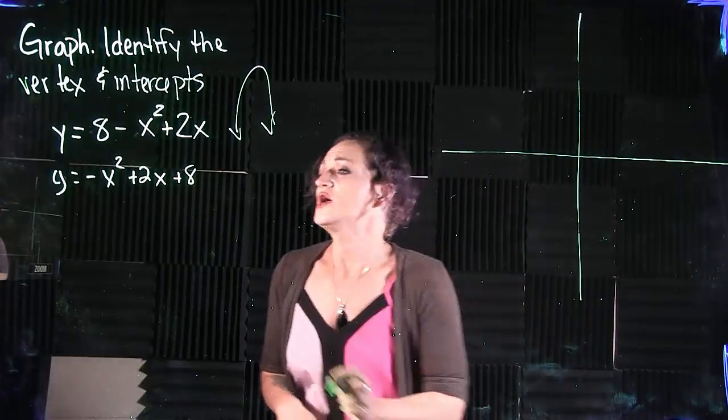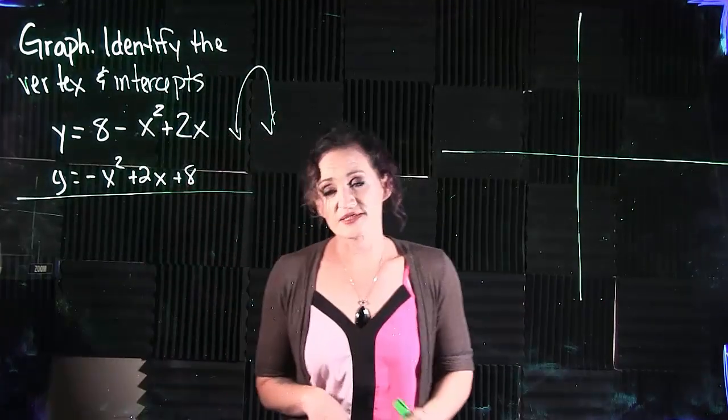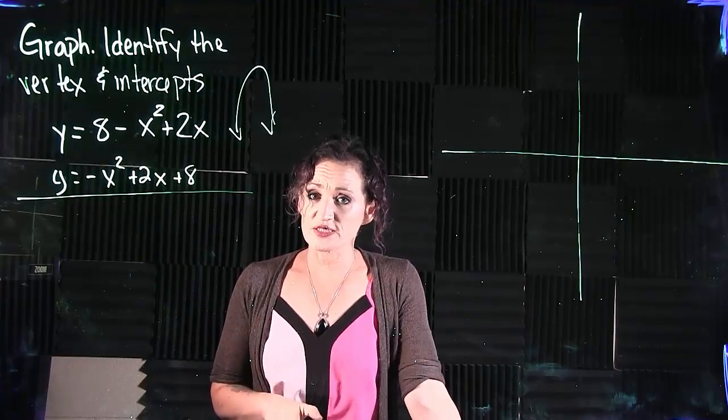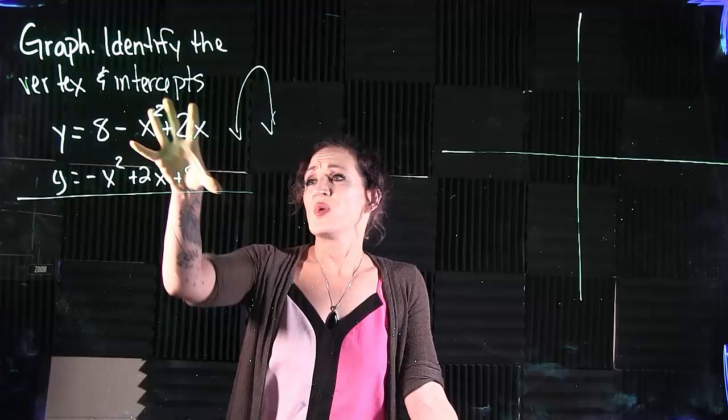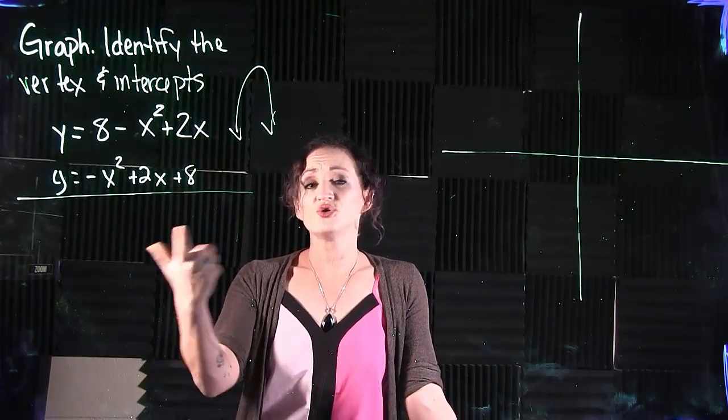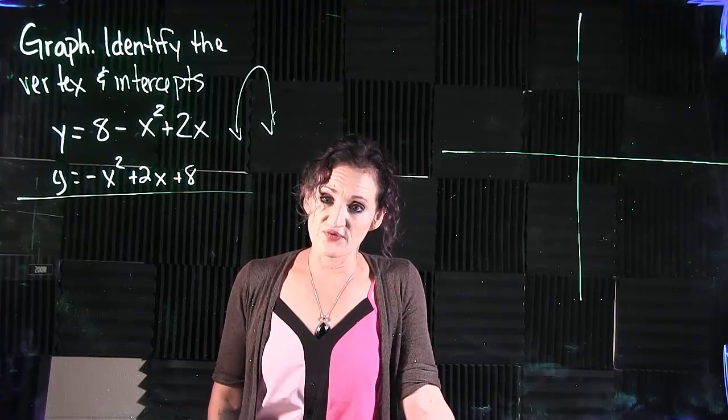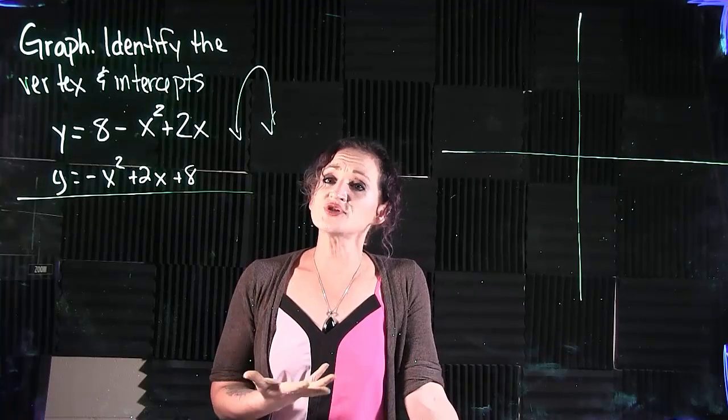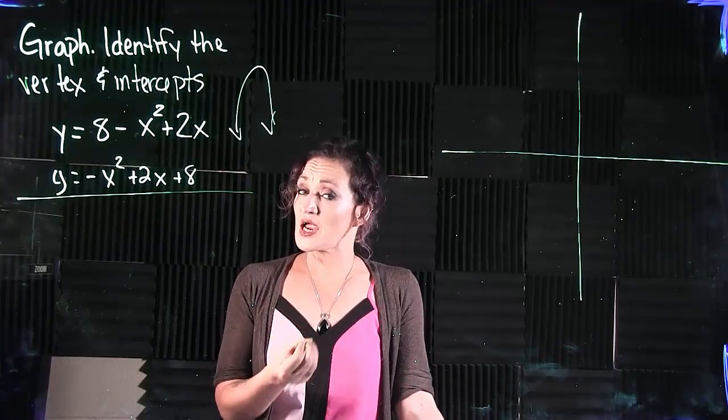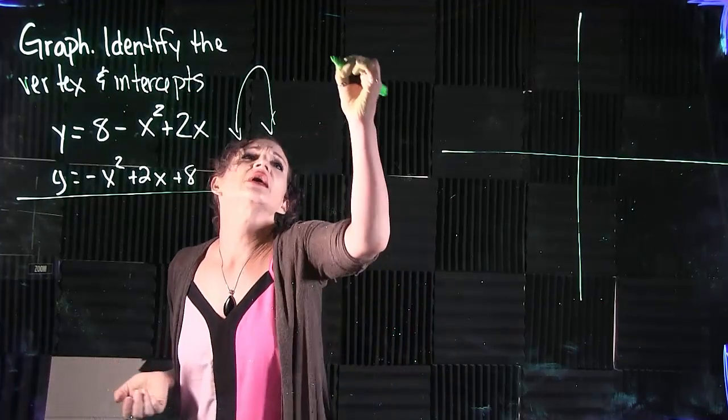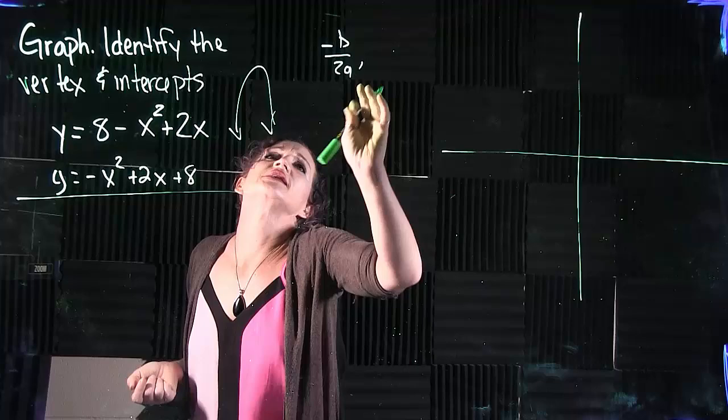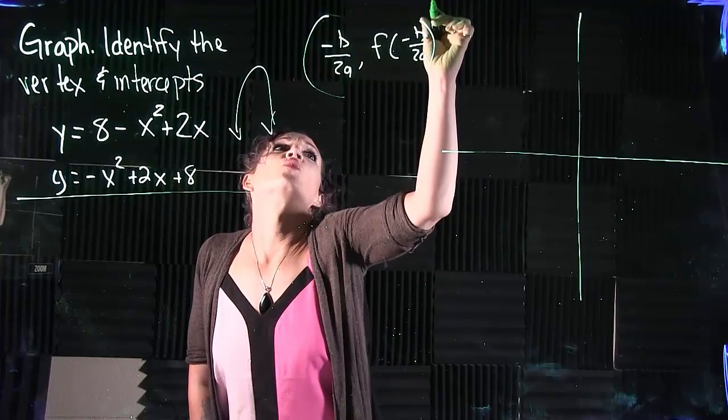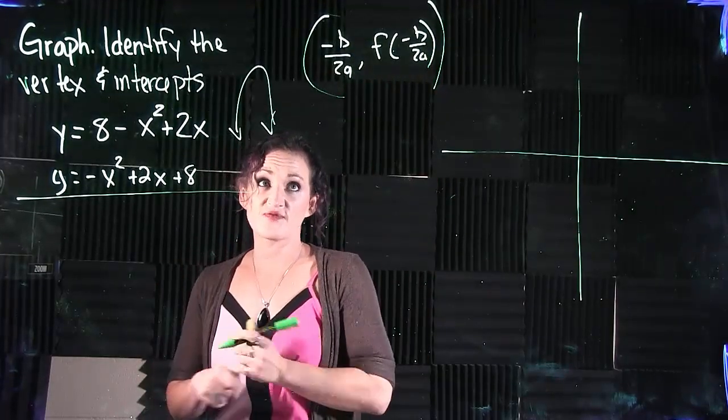So we want to find the vertex and we want to find the intercepts of this graph, or of this function here, so that we can accurately graph it. Now when we find the vertex, there's a couple things that you can do here. Our equation is not given to us in vertex form. If it was given to us in vertex form, we can easily grab the vertex from the equation using h, k. But if your equation's not in vertex form, there's another way that you can find the vertex of your equation and that's by using this little formula right over here: negative b over 2a, f of negative b over 2a will get you your coordinate for the vertex of your equation.